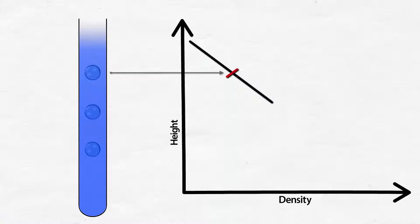The column is then calibrated by dropping in calibrated reference floats of known densities. The floats will slowly sink until each reaches liquid of its own density. This allows a relationship between height up the column and density to be determined.